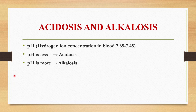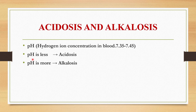Now I am going to explain how to identify whether it is acidosis or alkalosis. As I explained already, pH is the hydrogen ion concentration in the blood, and the normal value ranges from 7.35 to 7.45. If the pH is less than 7.35 we will call it acidosis, and if the pH is more than 7.45 we will call it alkalosis.